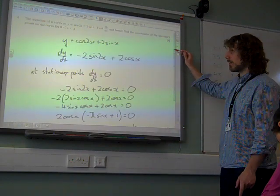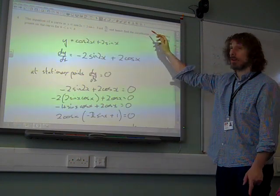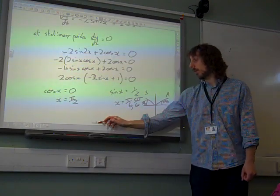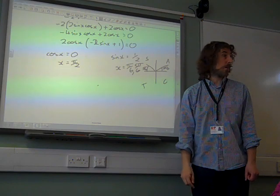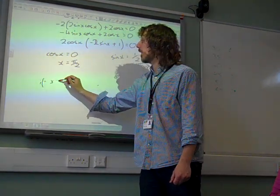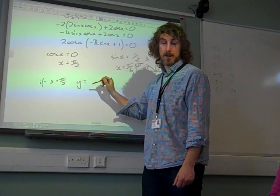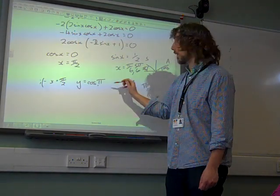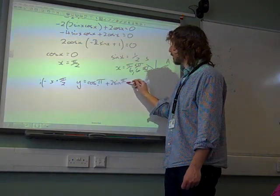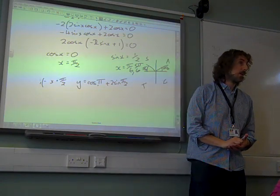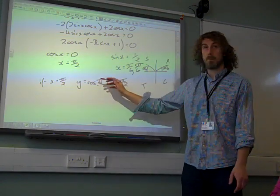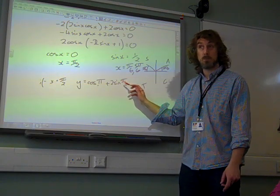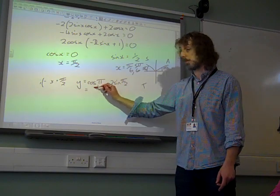And finally, the question did very clearly say, find the coordinates of the stationary points. So having found our three suitable x values, we need to find the coordinates that go with them. If x equals pi by 2, y is cos of pi, because it's cos of 2x, plus 2 sin pi by 2. That gives us cos of pi is minus 1, sin pi by 2 is 1. So that's minus 1 plus 2, that's 1.